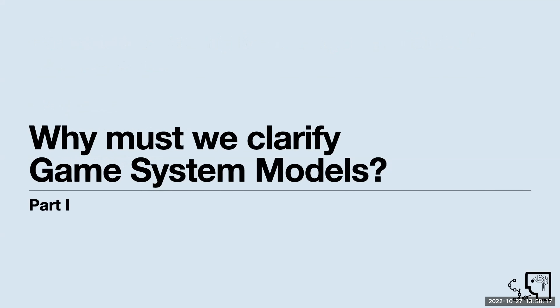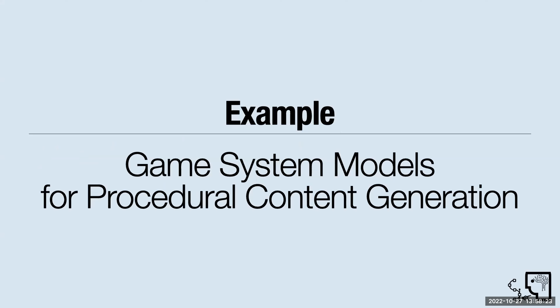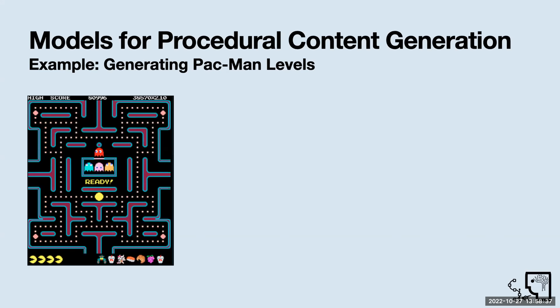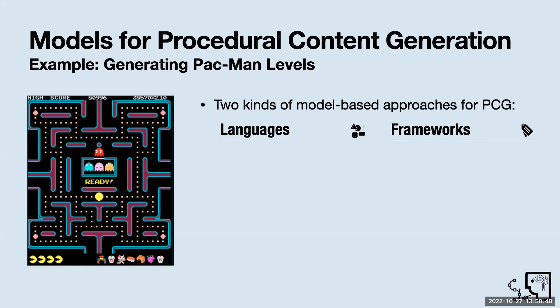Why is it that we need to clarify game system models? Let's focus for the sake of argument on game system models for procedural content generation, which I think we broadly understand as a community. For example, let's talk about generating Pac-Man levels — we have this idea of a level we want to generate, its overall function and form. If you wanted to use a model-based approach to generating Pac-Man levels, then you roughly have one of two choices available: you can either rely on a language or rely on a framework. These are buzzwords at this point, so let me clarify what I mean.